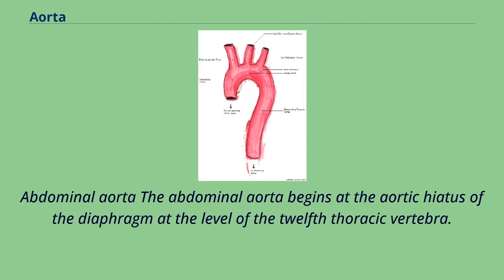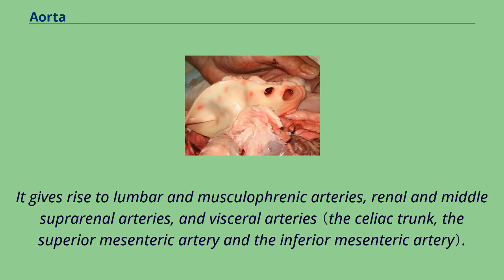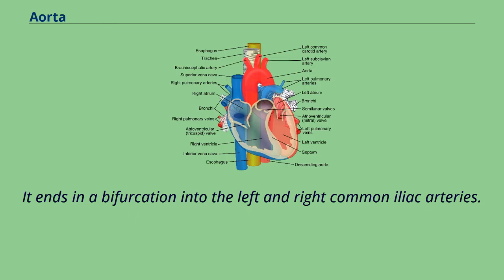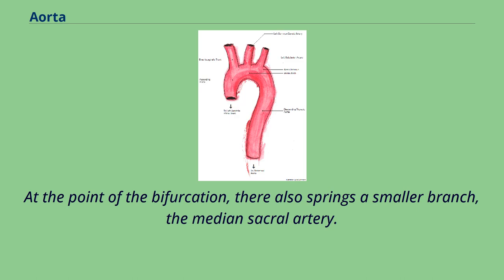The abdominal aorta begins at the aortic hiatus of the diaphragm at the level of the twelfth thoracic vertebra. It gives rise to lumbar and musculophrenic arteries, renal and middle suprarenal arteries, and visceral arteries. It ends in a bifurcation into the left and right common iliac arteries. At the point of the bifurcation, there also springs a smaller branch, the median sacral artery.